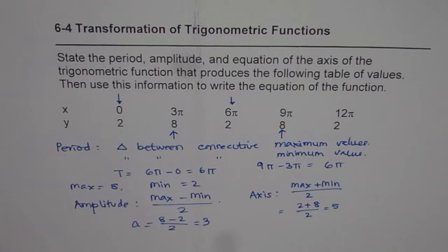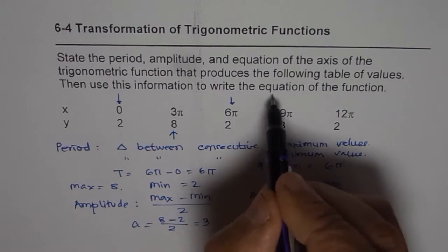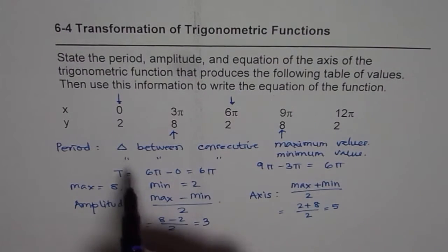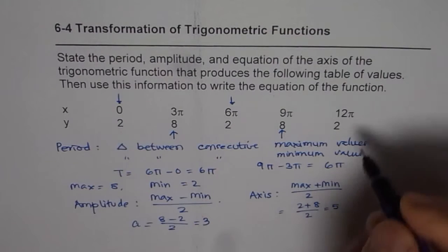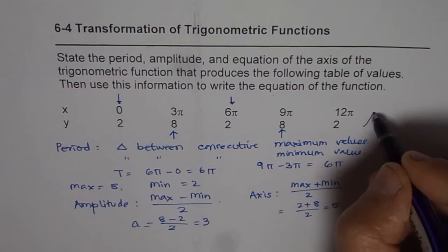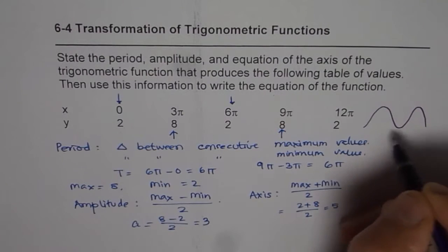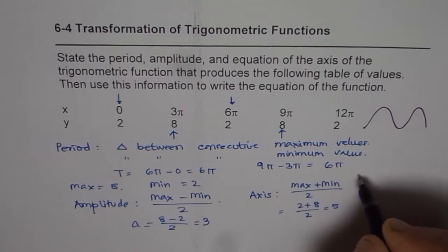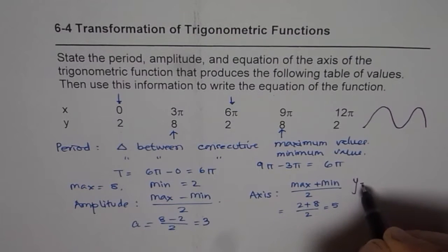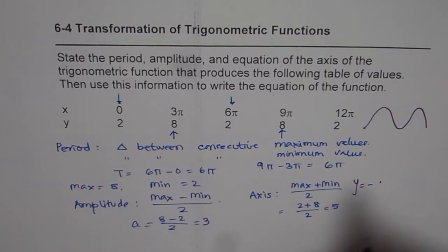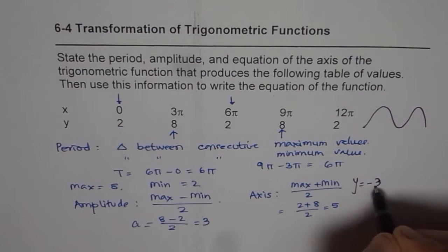Once you have all these parameters, you can write down the equation. Since we are starting with a minimum value, the function will be y = -cos. The amplitude is 3, so we write: y = -3cos...